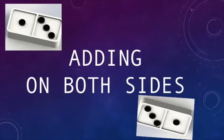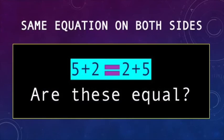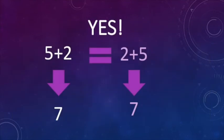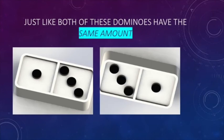Another way we can look at it is by adding on both sides, or the same equation on both sides. Five plus two is equal to two plus five. Are these equal? Let's take a look. Yes, five plus two equals seven, and two plus five equals seven. Just like both of these dominoes have the same amount — this domino has one dot and three dots, which equal five, and this other domino has three dots and one dot, which also equal five. So they have the same amount, so they are equal.